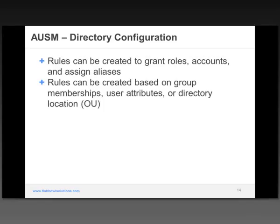So how does Advanced User Security Mapping help from a directory configuration standpoint? Not only can you map the permissions coming out of the directory to the roles or accounts in content server, you can also assign aliases — it makes it very easy through rules to do that. You can also, not only based on permissions, use the user attributes in the directory to do those mappings. For example, a user of a certain location or department — any of those user attributes coming from the directory can be used for those mappings as well.